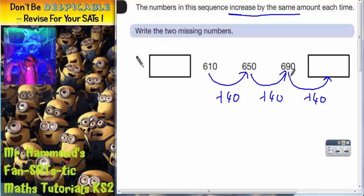Now some of you can do this step in your head, 690 add 40 and hopefully you will get 730.